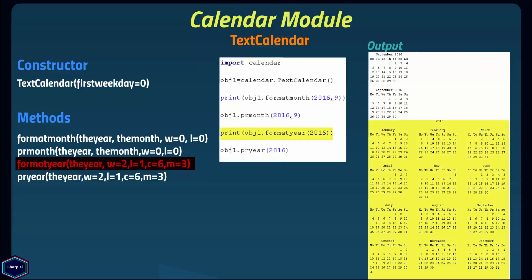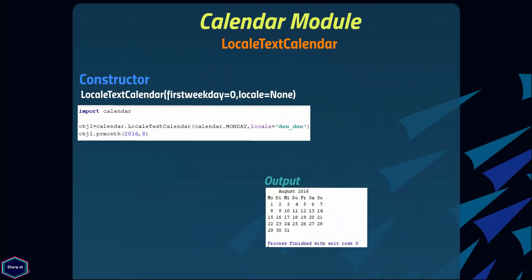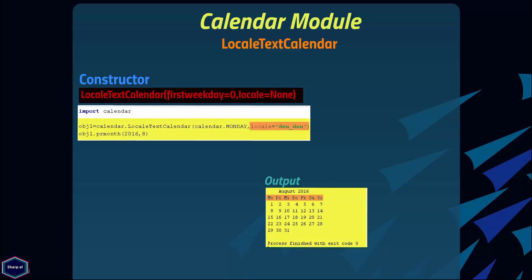The formatyear() method returns an m-column calendar for the entire year as a multiline string. The optional parameters w, l, c, and m can be used to set the width of date columns, blank lines between rows, space between months, and the number of months per row. The pryear() method prints the calendar for an entire year as returned by formatyear(). The LocaleTextCalendar class is a subclass of TextCalendar and its constructor takes an additional argument locale, so you can create a text calendar in your native language.